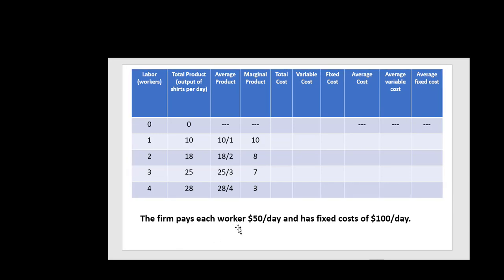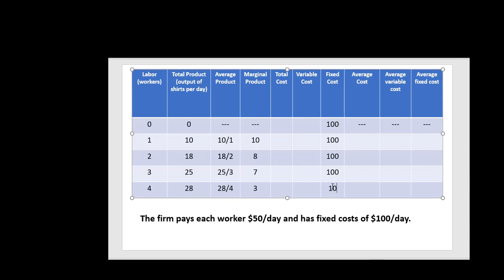I have some information down here on the firm's cost. The firm pays workers $50 a day, so each worker gets paid $50 a day, and the firm has a fixed cost of $100 a day. So the first thing I'm going to do is fill in fixed cost — $100. Regardless of our output, the firm has a fixed cost of $100 per day.